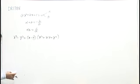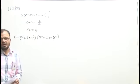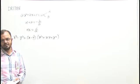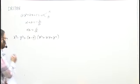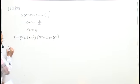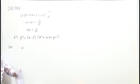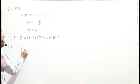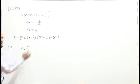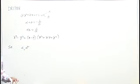Now, I will be using these two formulas in this solution. According to the question, one root is the square of the other. I mean to say, if alpha is one root, then the other root will be alpha square. These are the two roots of this equation.